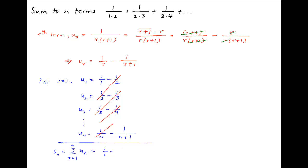The sum is equal to 1 minus 1 upon n plus 1, which simplifies to n plus 1 minus 1 divided by n plus 1, which is equal to n divided by n plus 1, which is the required sum to n terms of the given series.